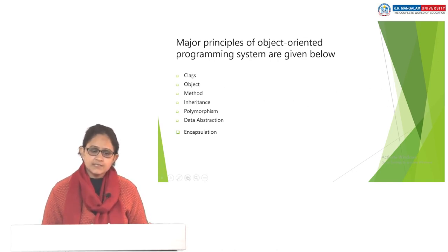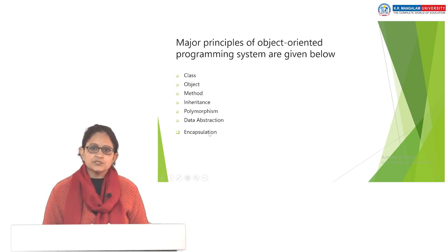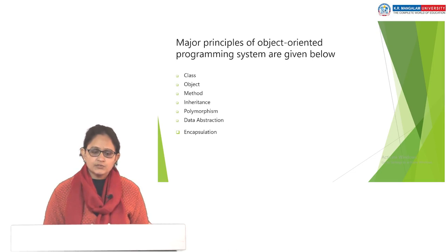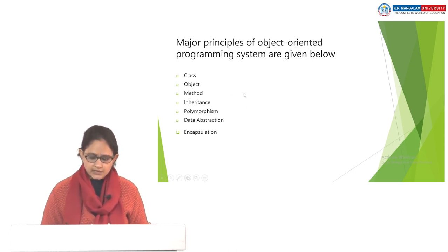We have classes, object, method, inheritance, polymorphism, data abstraction, and encapsulation. These are the major principles for object-oriented programming. Any language that has these features, we say that that particular language is an object-oriented language. Python has all these features — that is why we say that Python is an object-oriented programming language. We will be discussing these principles one by one in detail.